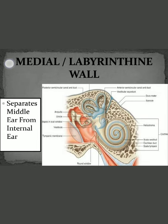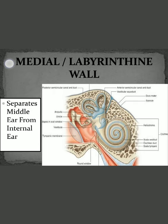The last wall is the medial or labyrinthine wall. It is called the labyrinthine wall because it is on the side of the inner ear, and the inner ear — labyrinth — is a network of different structures including the semicircular canals, vestibule, and the cochlea. This wall separates the middle ear from the inner ear.